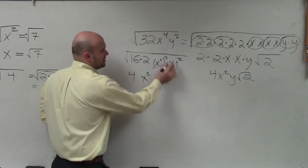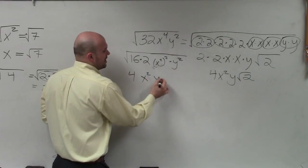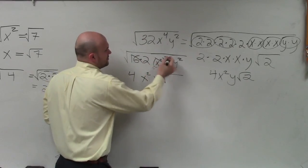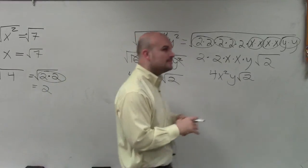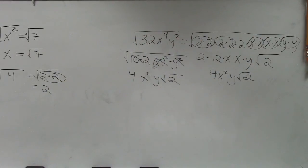And the square root of y squared is just y, and you're just left with 2. You don't have to use that method. However, sometimes prime factorization can take you a little bit of time.